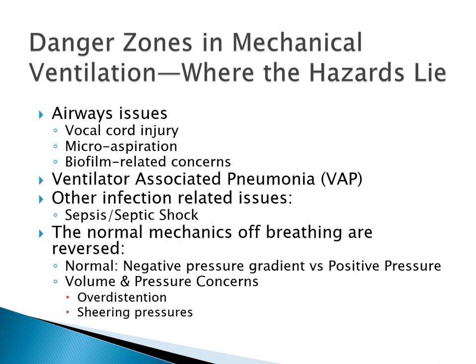Patients may develop VAP from aspiration, poor sterile technique, inadequate mouth care, or failure to raise the head of the bed — the whole VAP prevention bundle. We may also over-distend the lung and overstretch it, causing an inflammatory cascade, worsening the patient's condition and contributing further to ventilator-associated pneumonia.